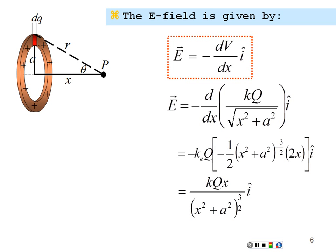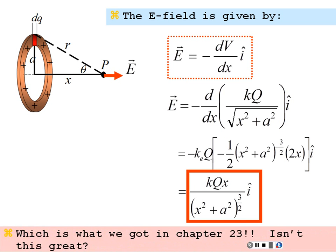So there's our E field as a function of x due to a ring of charge. It's along the positive x axis and there is no transverse component. This is exactly what we found in chapter 23. In chapter 23 we had to integrate in a very difficult way and make assumptions about transverse components canceling out. Here it was very easy — found the potential, took its derivative, found the E field. Much easier to take derivatives than to integrate and come up with the same answer.